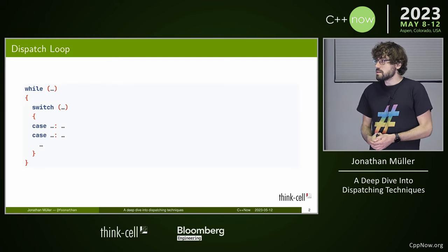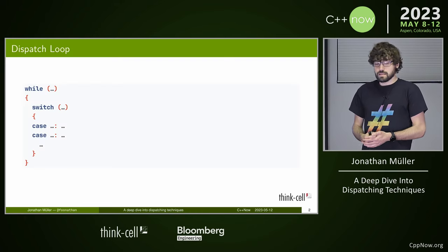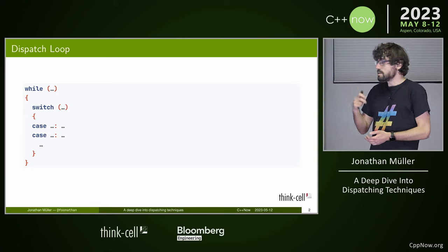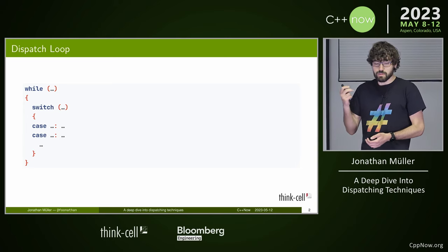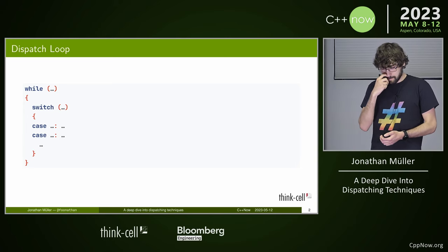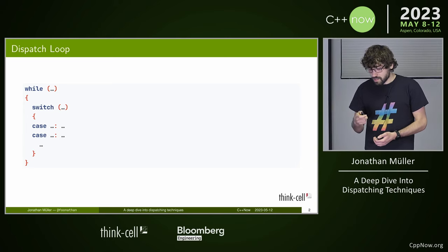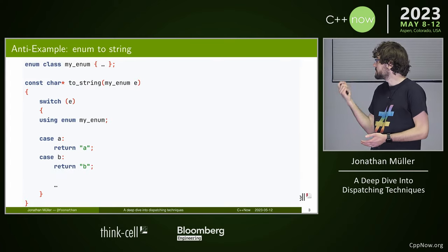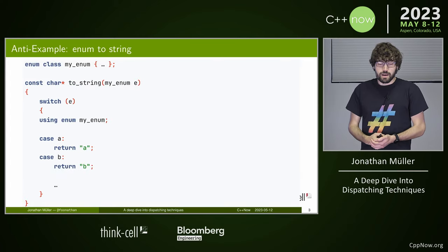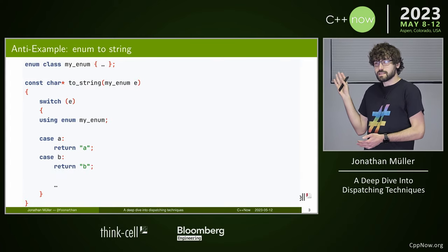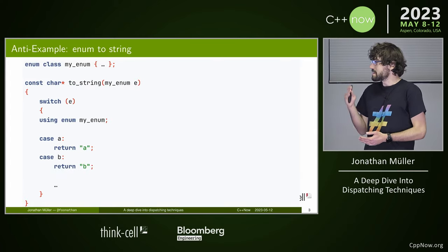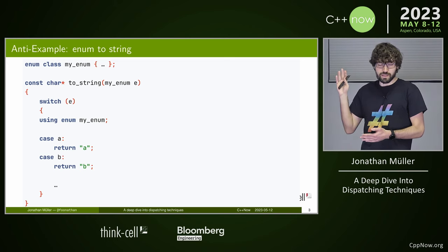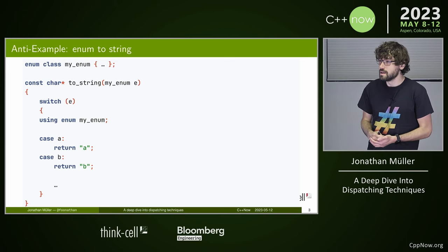I'm going to optimize a dispatch loop, which looks something like: we have a while loop, then a switch, and we want to make that fast. What I'm not concerned with is the performance of, for example, enum to string — if that is going to be a significant performance issue, something's going really wrong.